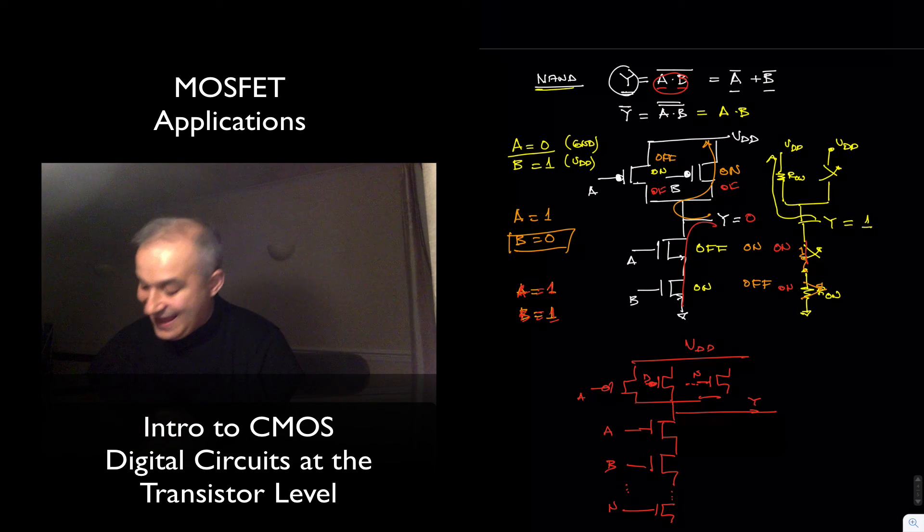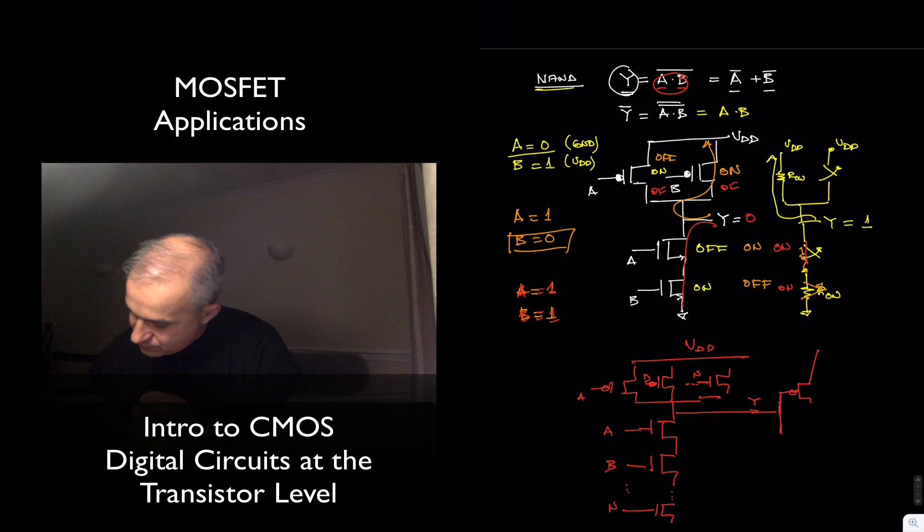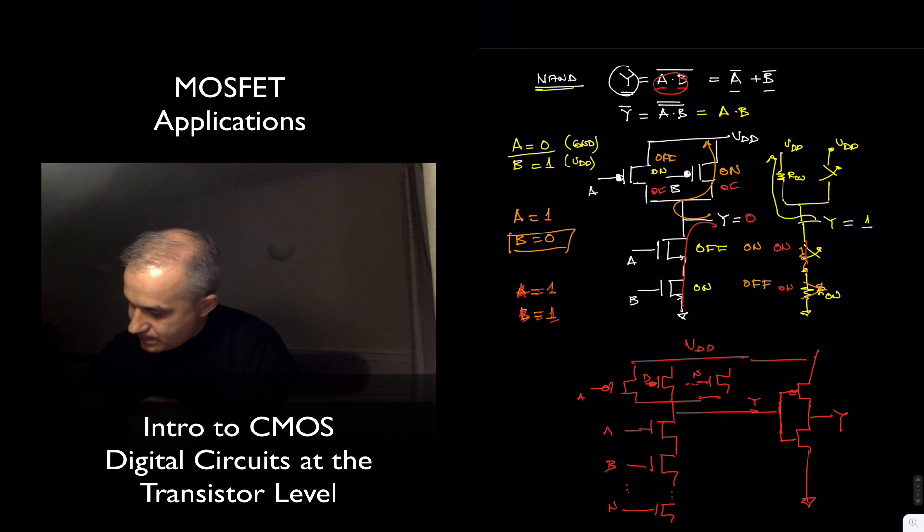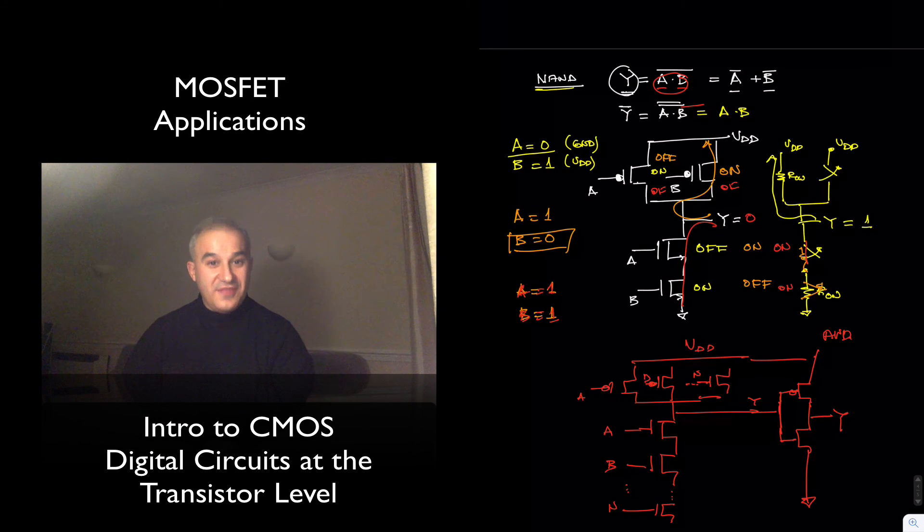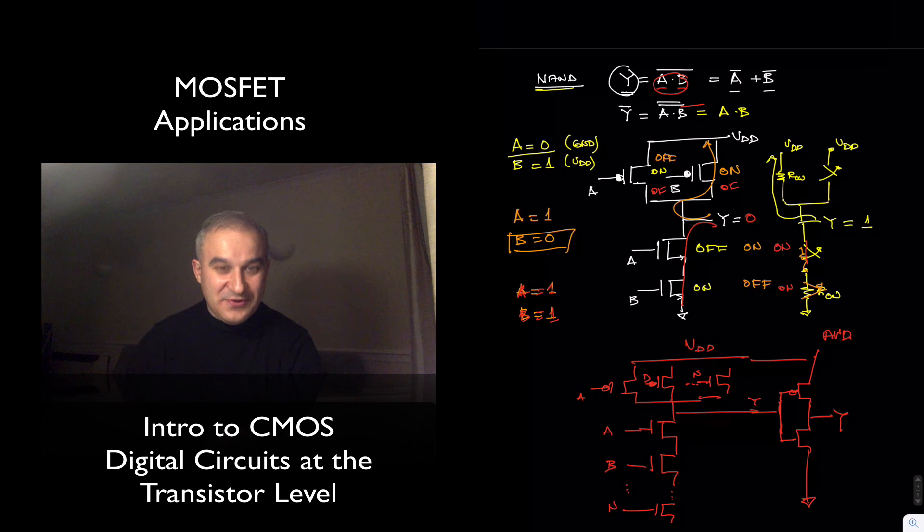And if we wanted to create the AND gate, we just create here an inverter, and this will be the AND gate. We start with the NAND gate and we NAND it again. Thank you. In the next video, we're going to go over how to design an arbitrary logic function.